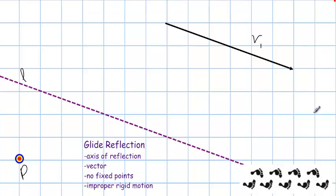Today's lesson is about a glide reflection. To perform a glide reflection you need both an axis of reflection and a vector to slide your shape along. There are no fixed points in a glide reflection and it is an improper rigid motion.